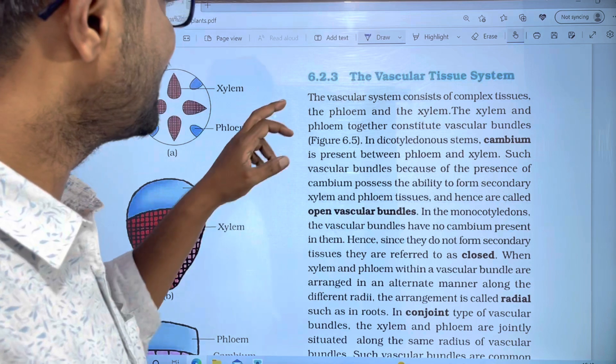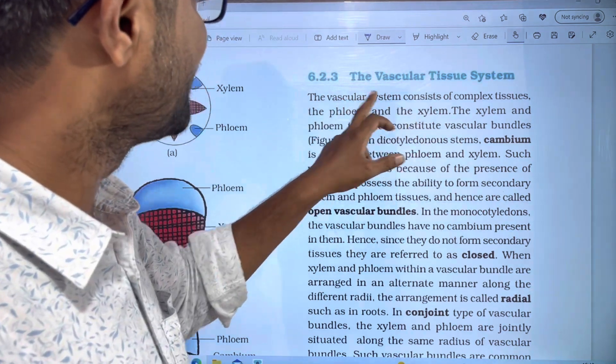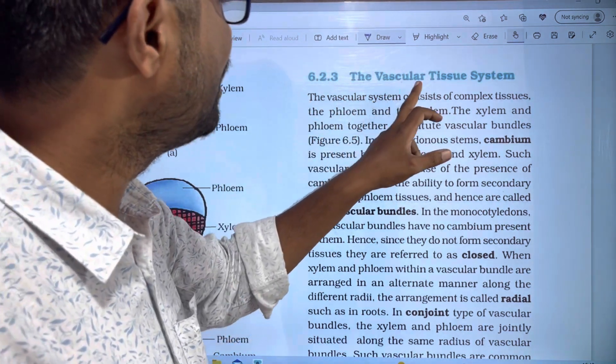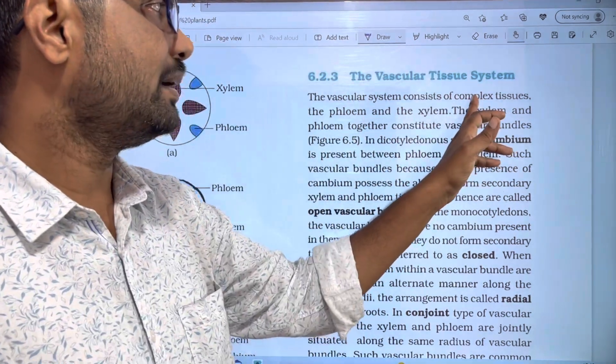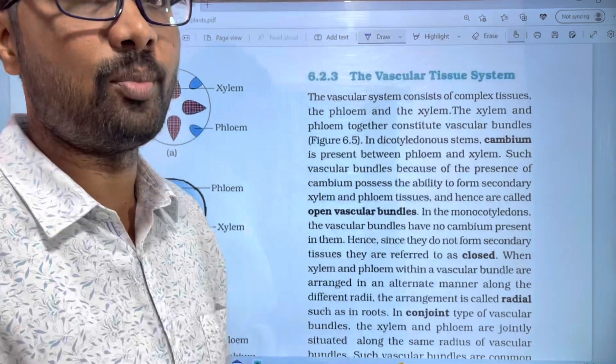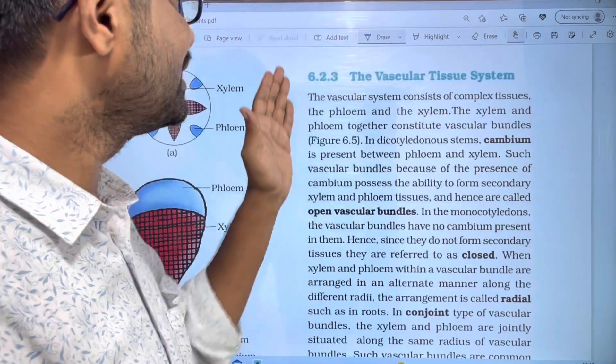The vascular tissue system consists of complex tissue. We previously discussed simple tissue. The vascular tissue system is a vascular tissue.